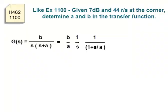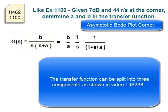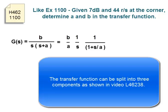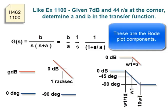This example is similar to exercise 1100. Given 7 dB and 44 radians per second at the corner, determine A and B in the transfer function. The transfer function can be split into three components as shown in video L46238. These are the Bode plot components.